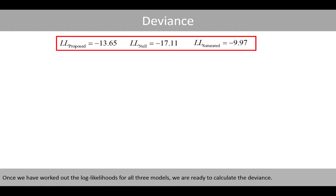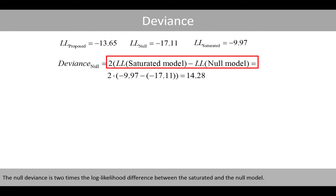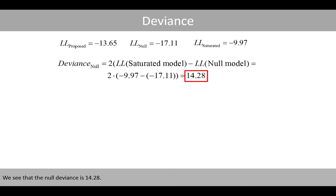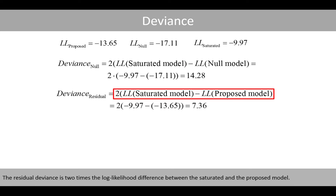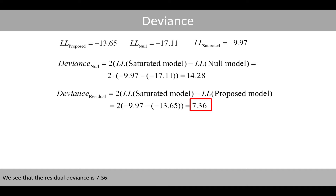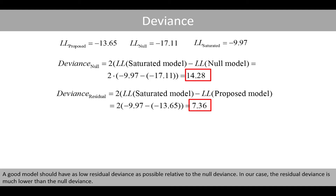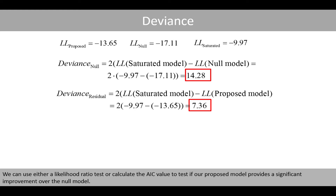Once we have worked out the log likelihoods of all three models, we are ready to calculate the deviance. The null deviance is 2 times the log likelihood difference between the saturated and the null model, giving a null deviance of 14.28. The residual deviance is 2 times the log likelihood difference between the saturated and the proposed model, giving a residual deviance of 7.36. A good model should have as low a residual deviance as possible relative to the null deviance. In our case, the residual deviance is much lower than the null deviance. We can use either a likelihood ratio test or calculate the AIC value to test if our proposed model provides a significant improvement over the null model.